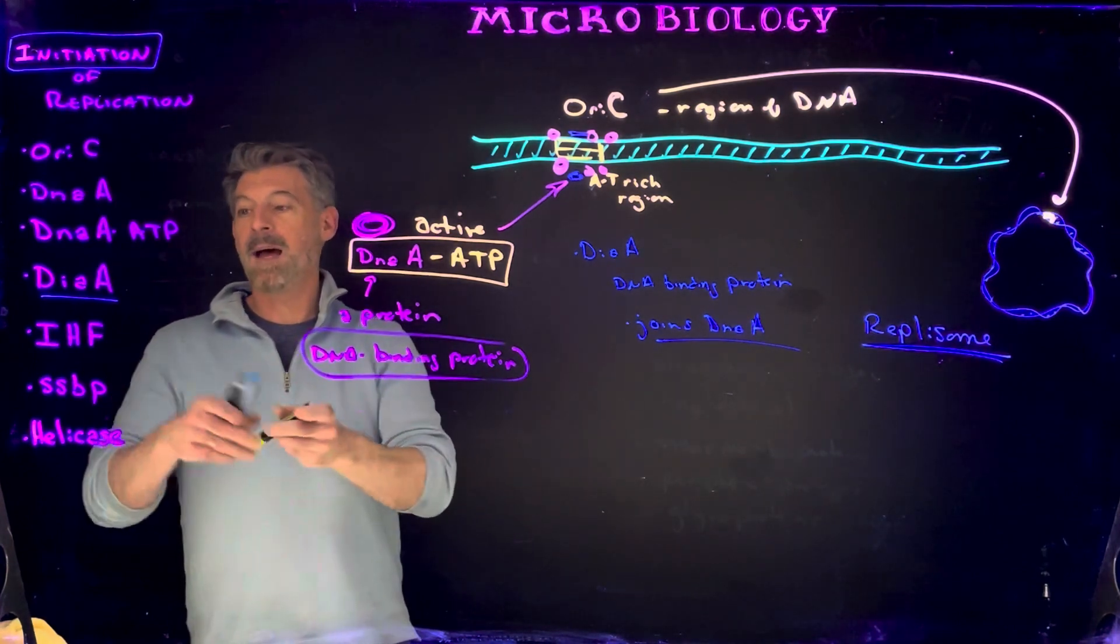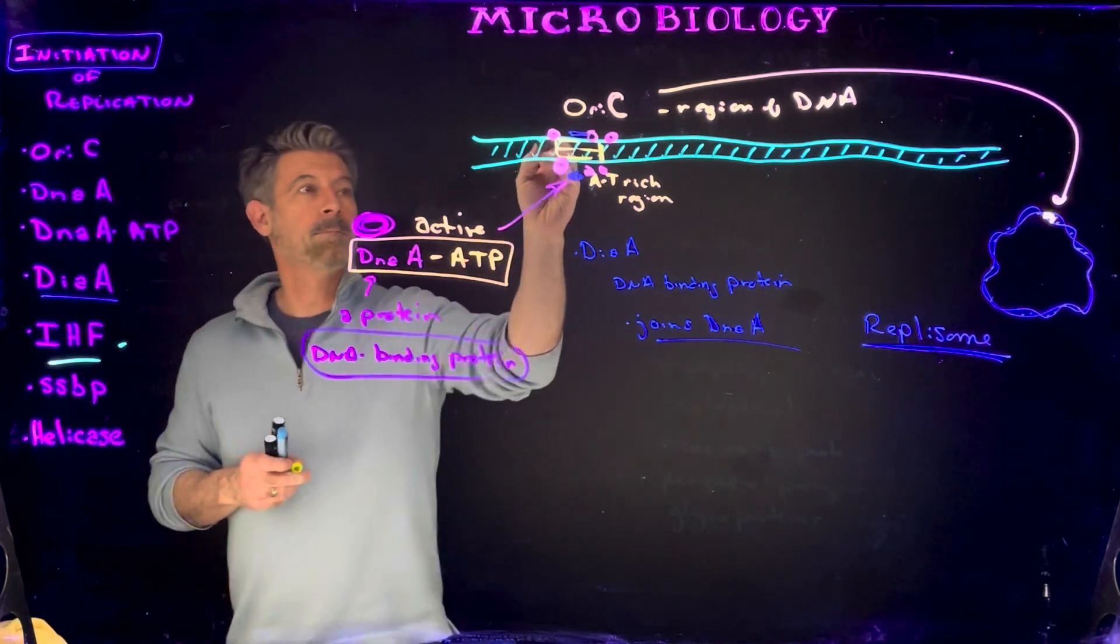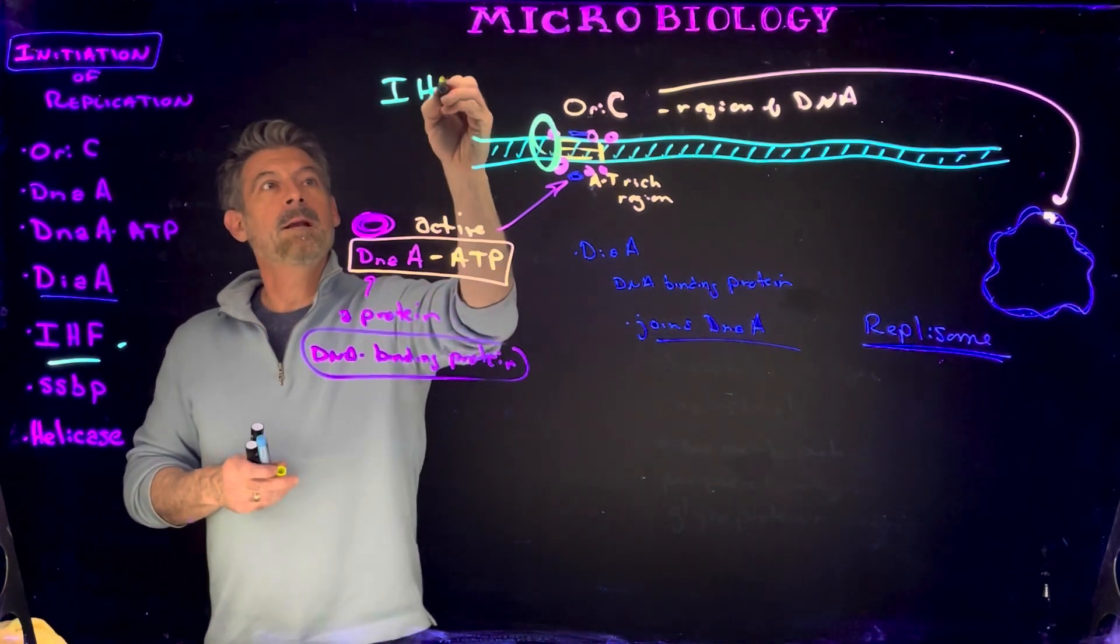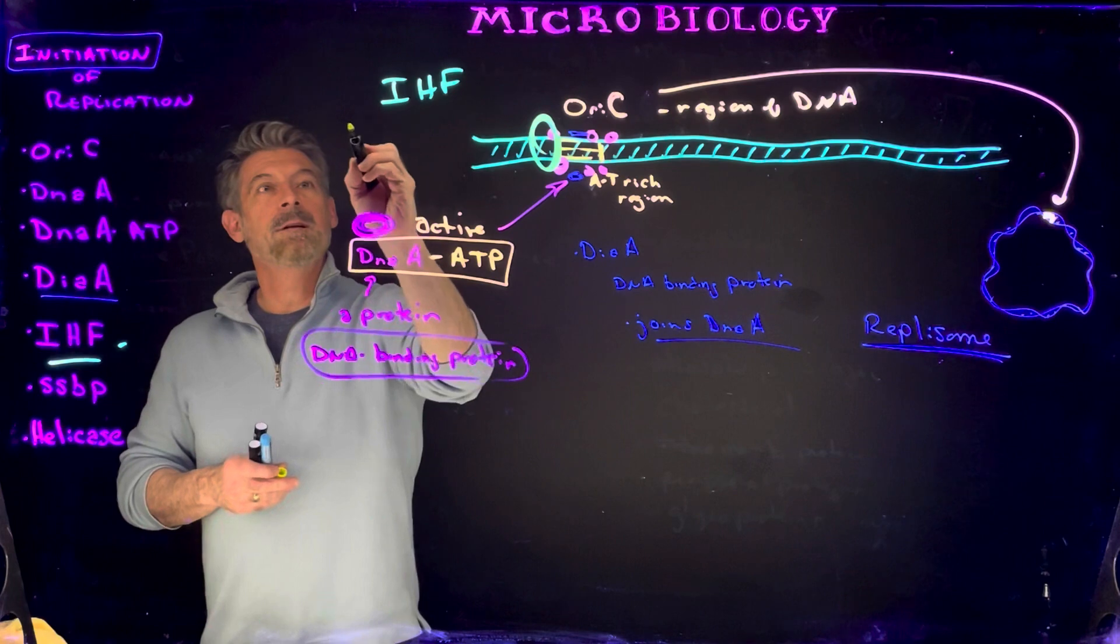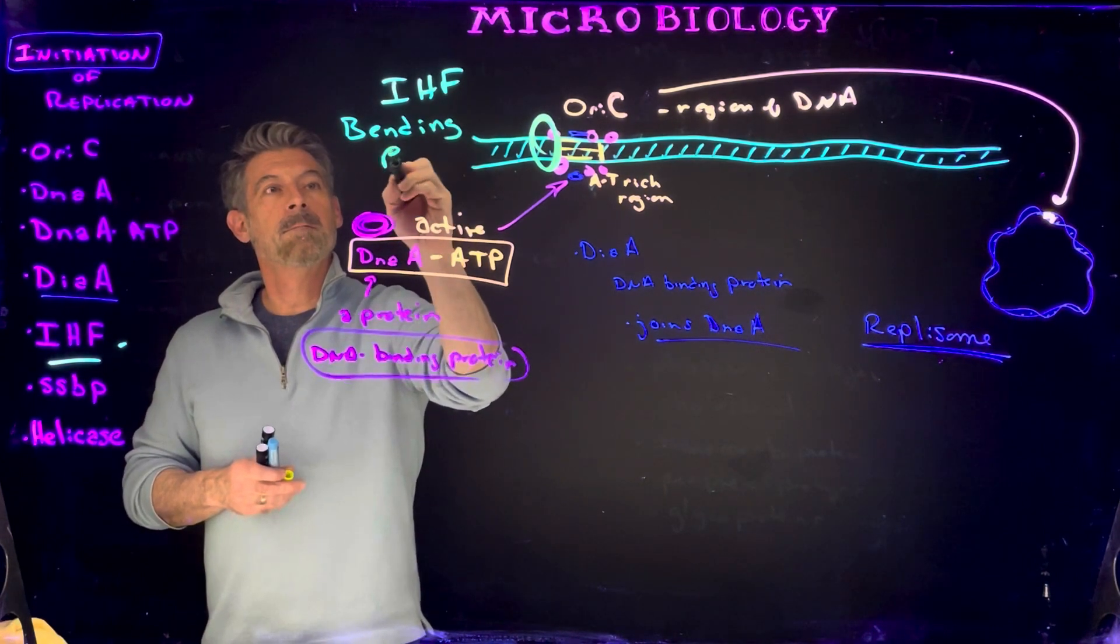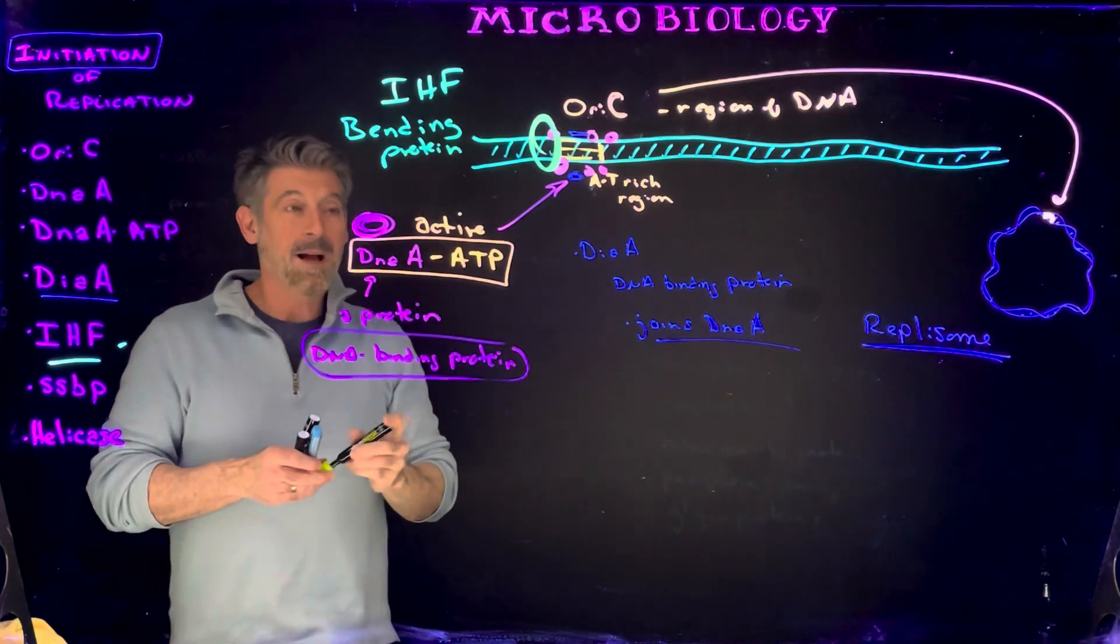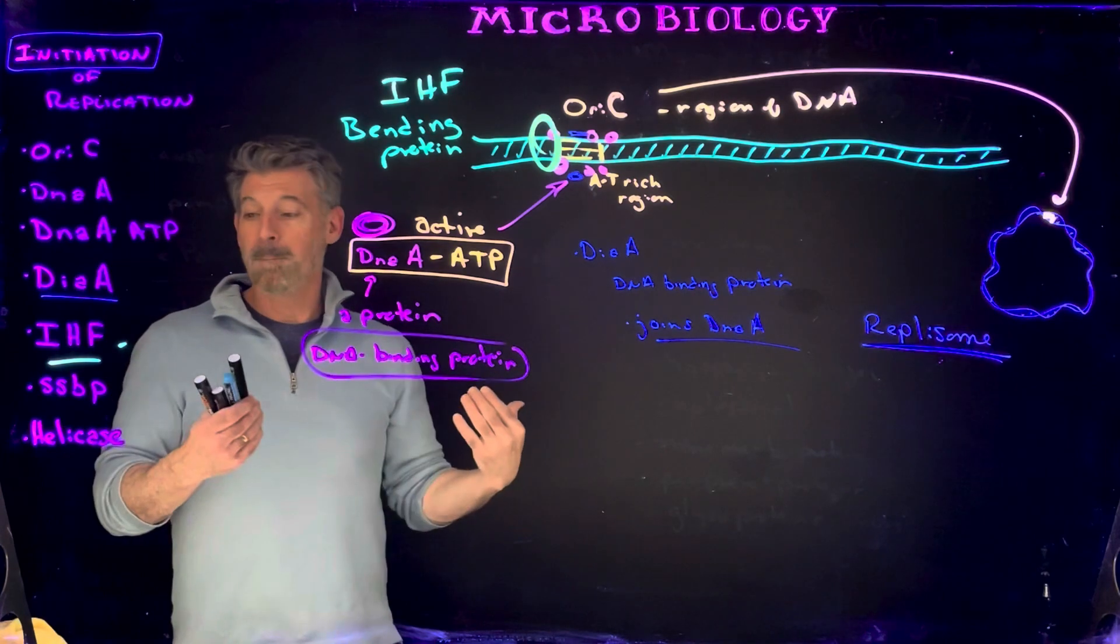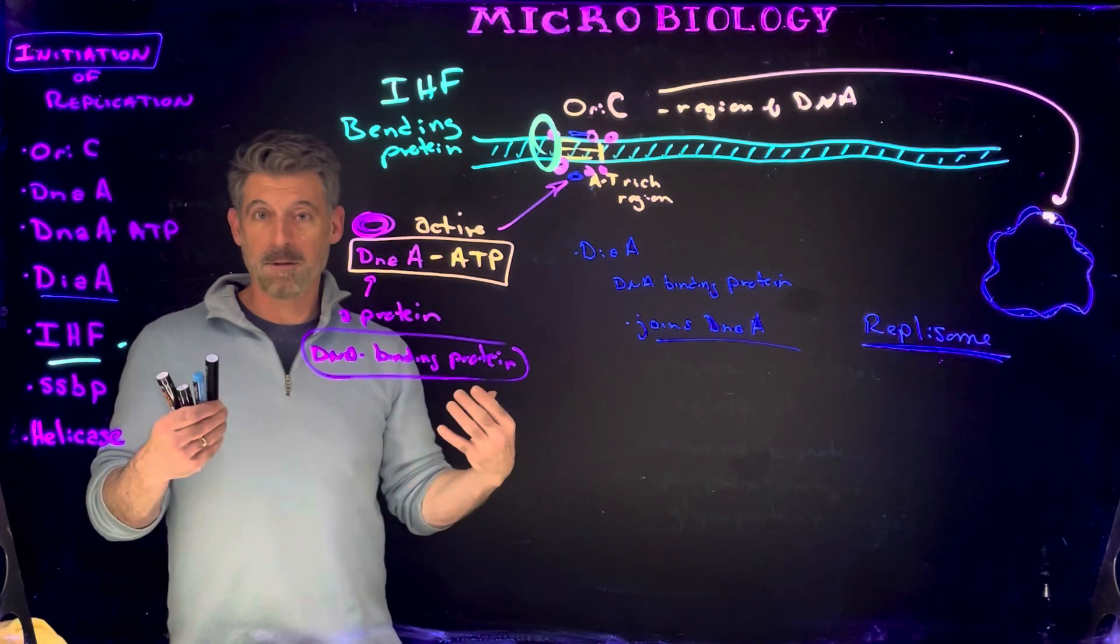And then we have a protein called IHF, which will come in here. And IHF is a bending protein. So what IHF is going to do is then bend the DNA to help kind of break it apart and open up the two strands.